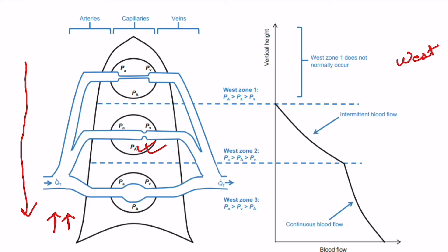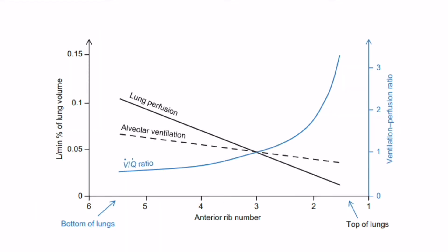For ideal gas exchange, the ventilation and perfusion to each alveolus should be matched, giving exactly the right amount of ventilation-perfusion to fully oxygenate all the passing blood — that is, a ventilation-perfusion ratio equal to 1. However, for our lungs in health it's 0.8; at the bases it's 0.6, and it increases to 3 at the apex.